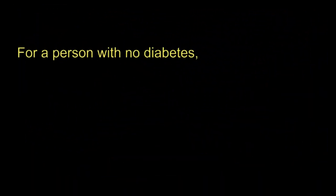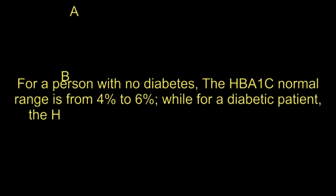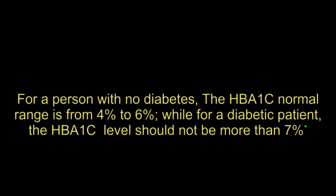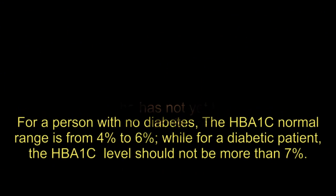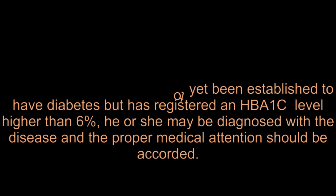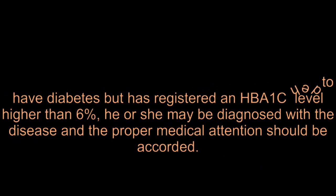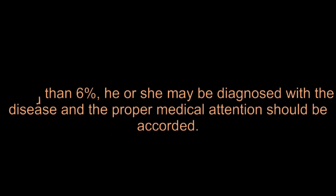For a person with no diabetes, the HbA1c normal range is from 4% to 6%, while for a diabetic patient, the HbA1c level should not be more than 7%. For an individual who has not yet been established to have diabetes but has registered an HbA1c level higher than 6%, he or she may be diagnosed with the disease and the proper medical attention should be accorded.